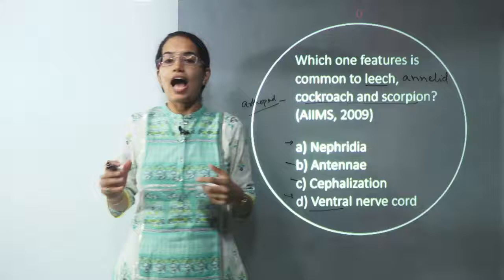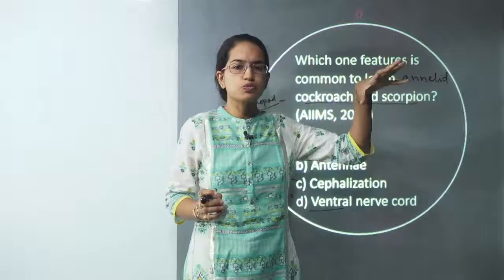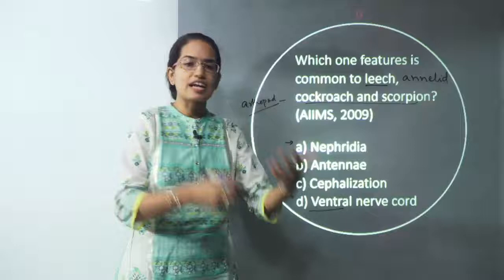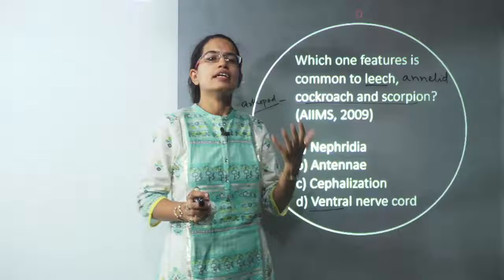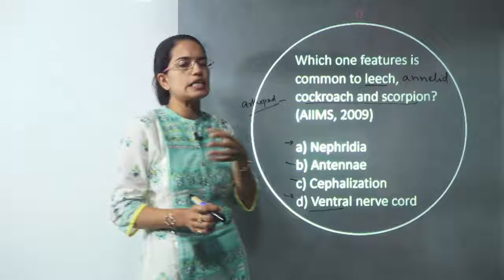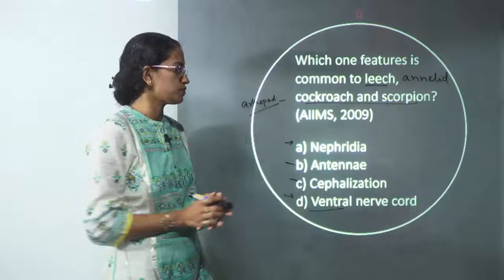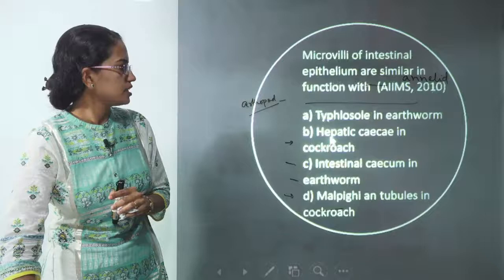This was a very tricky question because three organisms from different groups were given, and students might be confused about how to analyze them. The best approach is to identify the family to which they belong and work from there. Once we identify the groups properly, we know the specificities for each, and the question becomes much easier to answer.